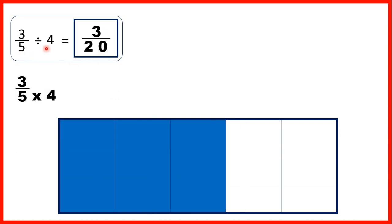Now for 3 fifths divided by 4, we can show 3 fifths, and remember dividing by 4 is the same as finding a quarter of something. If we shade 1 quarter of what were our 3 fifths in red, you can see that our fraction bar is now split into 20 pieces altogether—that's our denominator—and 3 of those pieces are red, so that's our numerator.